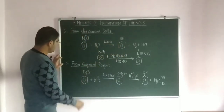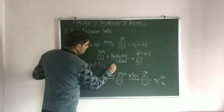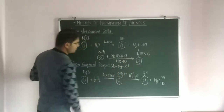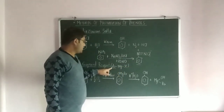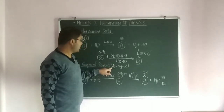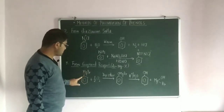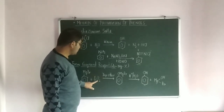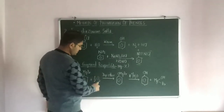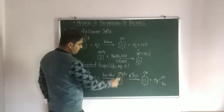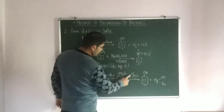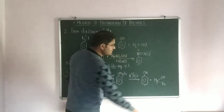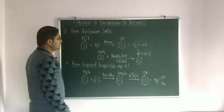Another method is from the Grignard reagent. The Grignard reagent formula is ArMgX — here we use an aromatic compound, so we write ArMgX. This is phenyl magnesium bromide: C6H5MgBr reacts with half O2 in the presence of dry ether. From one oxygen, O-MgBr is formed, followed by hydrolysis where H⁺ is introduced, giving O-H on the ring with elimination of HO-MgBr (hydroxy magnesium bromide), yielding phenol.